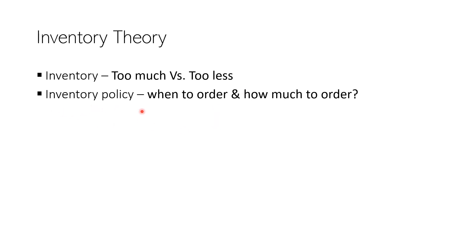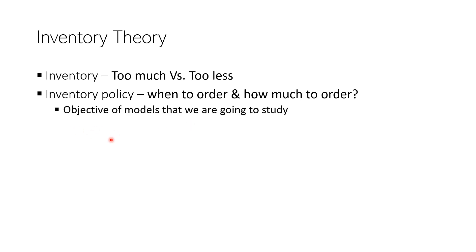Inventory policy refers to two decisions to be taken by any player in the supply chain: when to order and how much to order. The objective of this unit is to come up with an inventory policy that balances the costs involved — since too much inventory increases one cost and decreases another, and too little inventory does the reverse. We want to strike a balance between the two through the mathematical models in inventory theory. This concludes the brief introduction to inventory theory; see you in the next video.